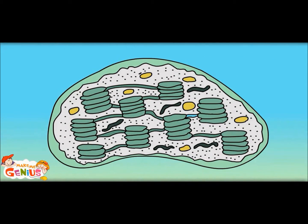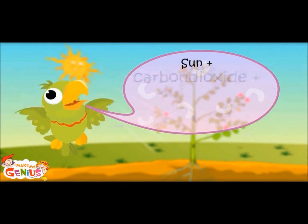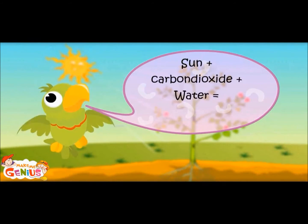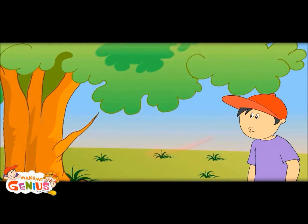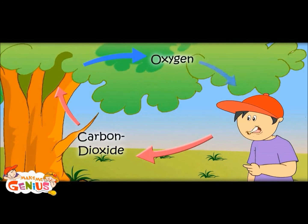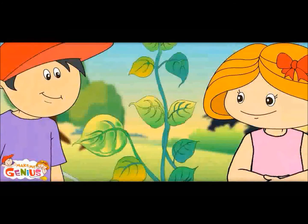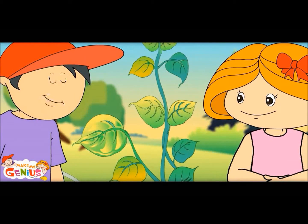So food is made here, in these cells. With carbon dioxide, sunlight, and water, the plant makes food. Sun plus carbon dioxide plus water equals glucose plus oxygen. The oxygen which we breathe also comes from plants. So plants make food and we get oxygen!